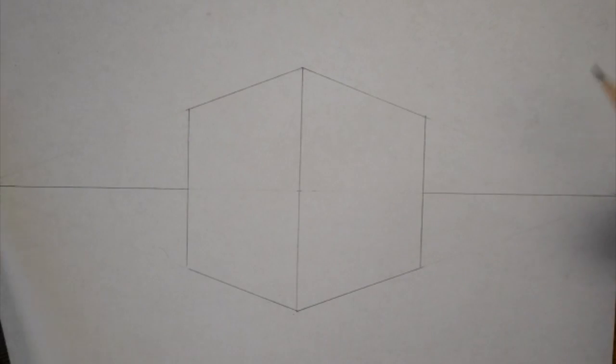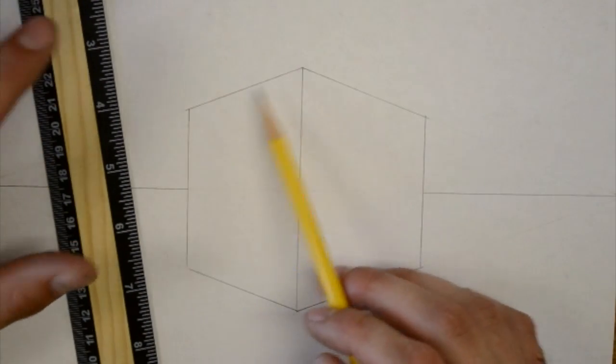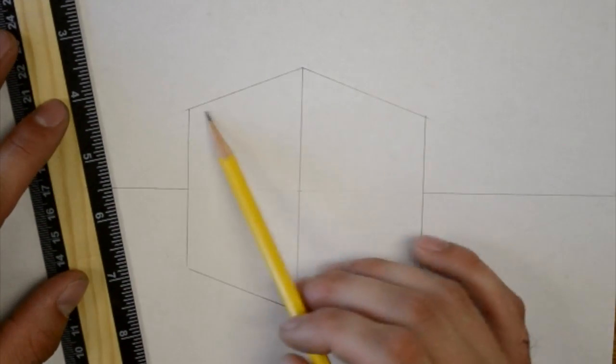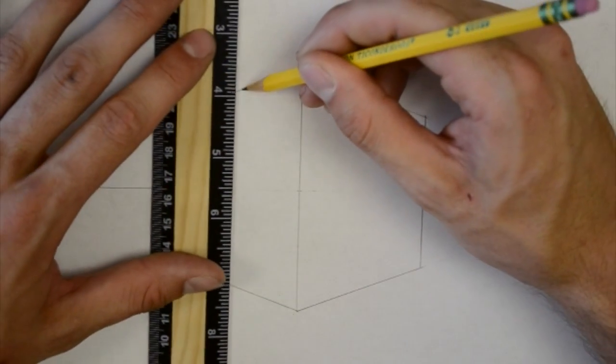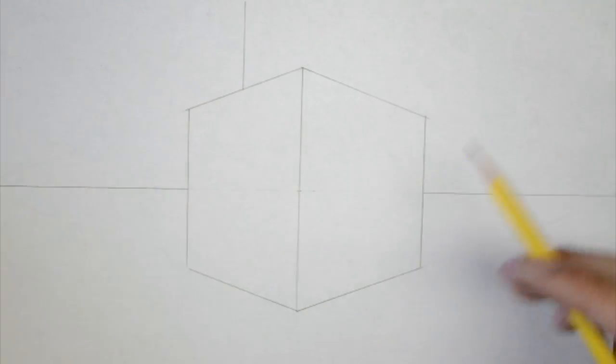So for this example, I have my shape drawn. If you don't know how to draw this shape, you can check out the video from the previous day. And I'm going to put a box sitting on top of this box. So in the middle of this line right here, I'm going to go ahead and draw a vertical line. And I'm not going to make it too tall.